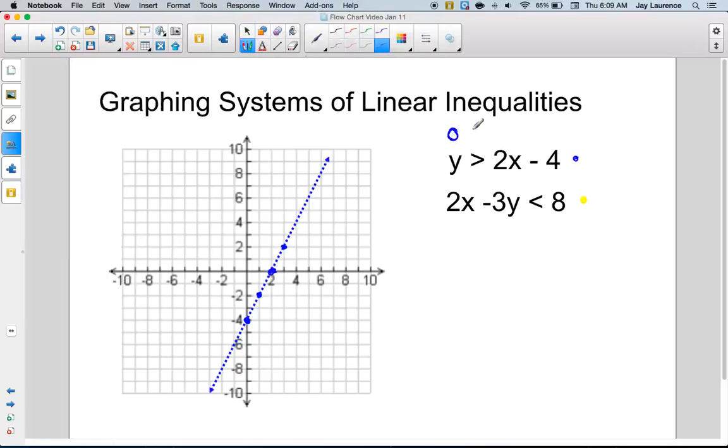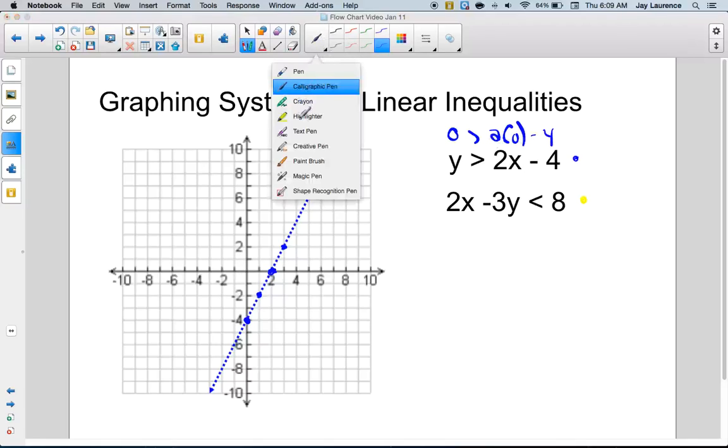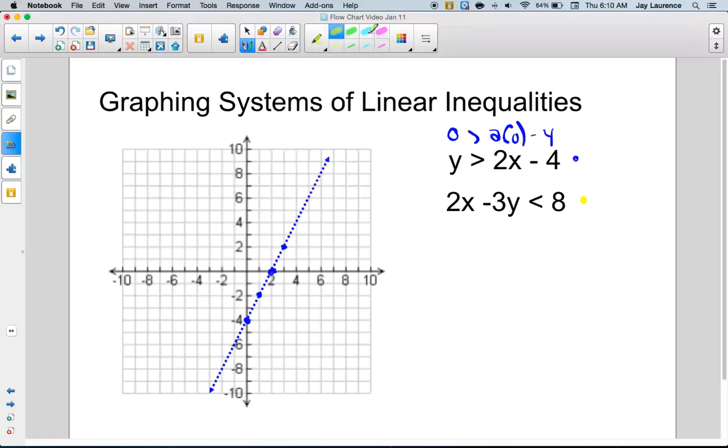So I can plug in zero, zero. So, zero is greater than two times zero minus four. Is that a true statement? Remember, I'm testing with the origin, and I believe it is, because I believe the right-hand side will simplify down to negative four. So, I'm gonna shade the origin side of my line. Remember, you never wanna use a little trick. Always use a test point, always. The test point will never fail you, never.